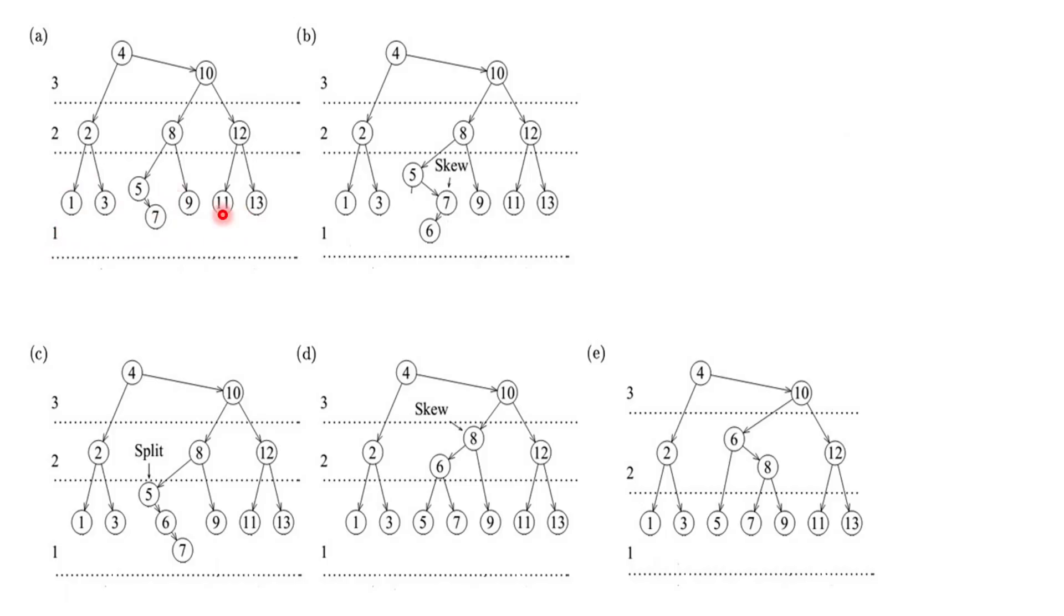And there's going to be different levels in which you group the nodes. This is level one, this is level two and this is level three. And there's going to be some operations like skew and split which are important to rebalance the tree and that will move nodes and change the pointers.